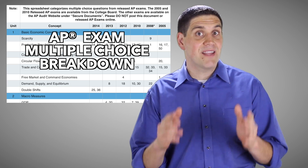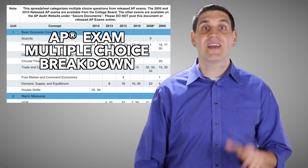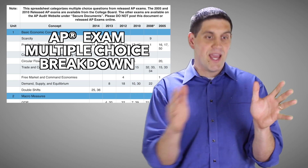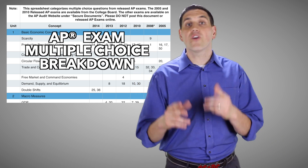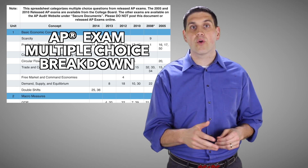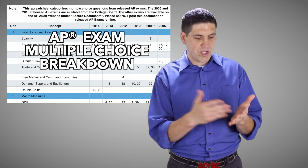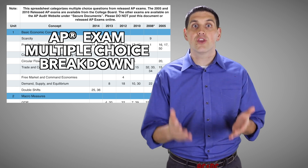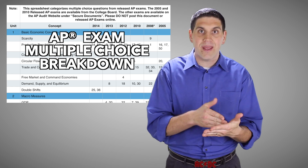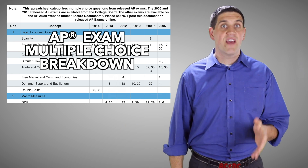Another thing that's new is a released AP exam multiple choice breakdown that takes 700 multiple choice questions and organizes them by topic. So if you're looking for a good multiple choice question on crowding out or monopolistic competition, you don't have to look through a bunch of AP exams — you can go look at the breakdown, it tells you right where it is. You can find it in seconds.